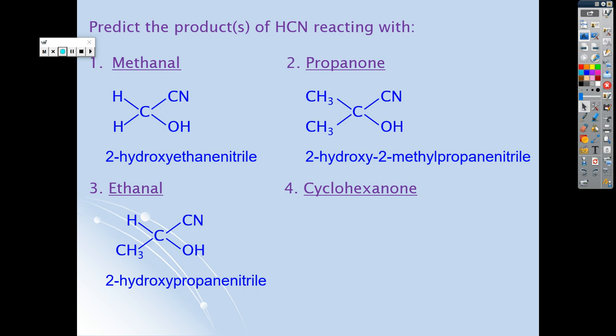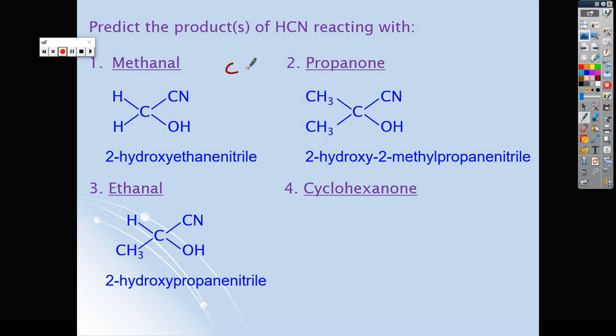Those are your answers. All you were really doing was taking the methanal—CH2=O with hydrogen there—and then following the reaction from before: break the double bond to a single bond, that becomes an OH, and put your CN on there. The thing that will catch people out is we're starting with methanal, but now we've got two carbons in our compound, so we go to 2-hydroxyethanenitrile.